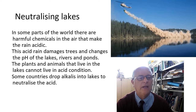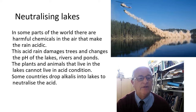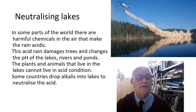Neutralizing lakes. In some parts of the world there are harmful chemicals in the air that make rain acidic. This acid rain damages trees and changes the pH of lakes, rivers and ponds. The plants and animals that live in the lakes cannot survive in acidic conditions. Some countries drop alkalis, such as lime, into lakes to neutralize the acid.